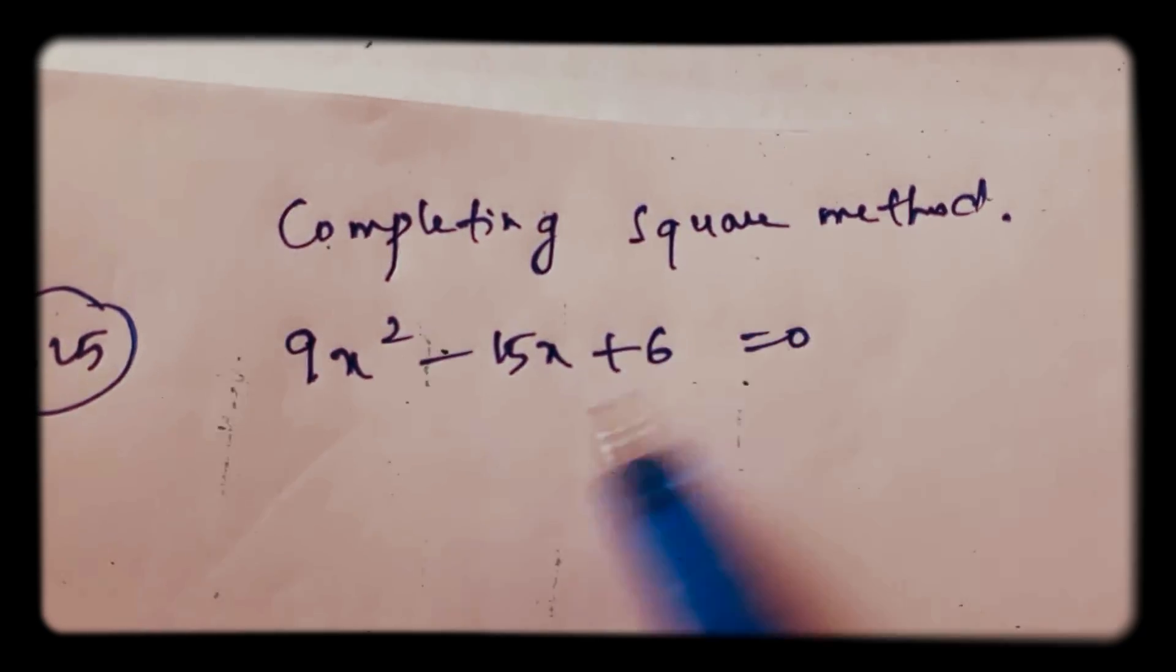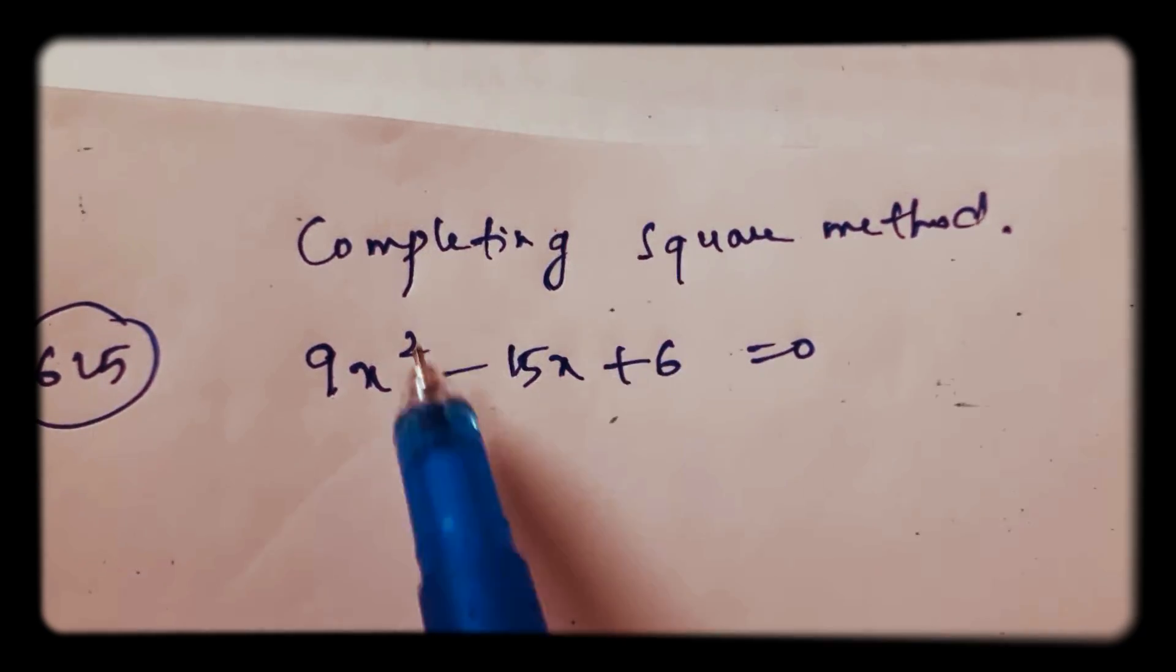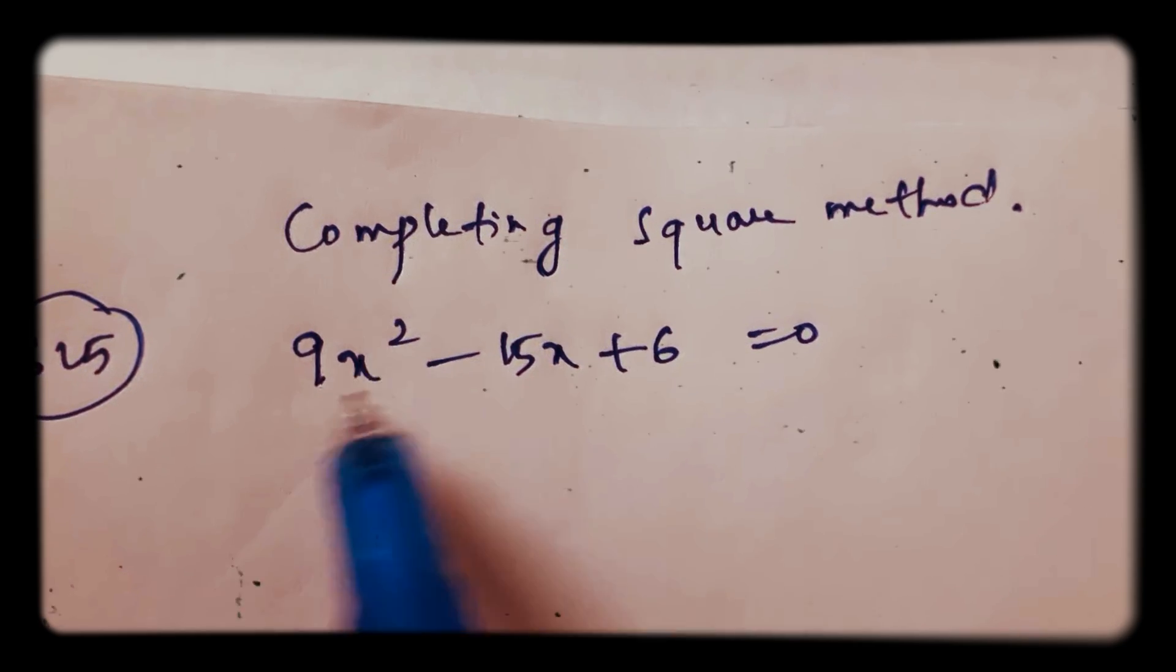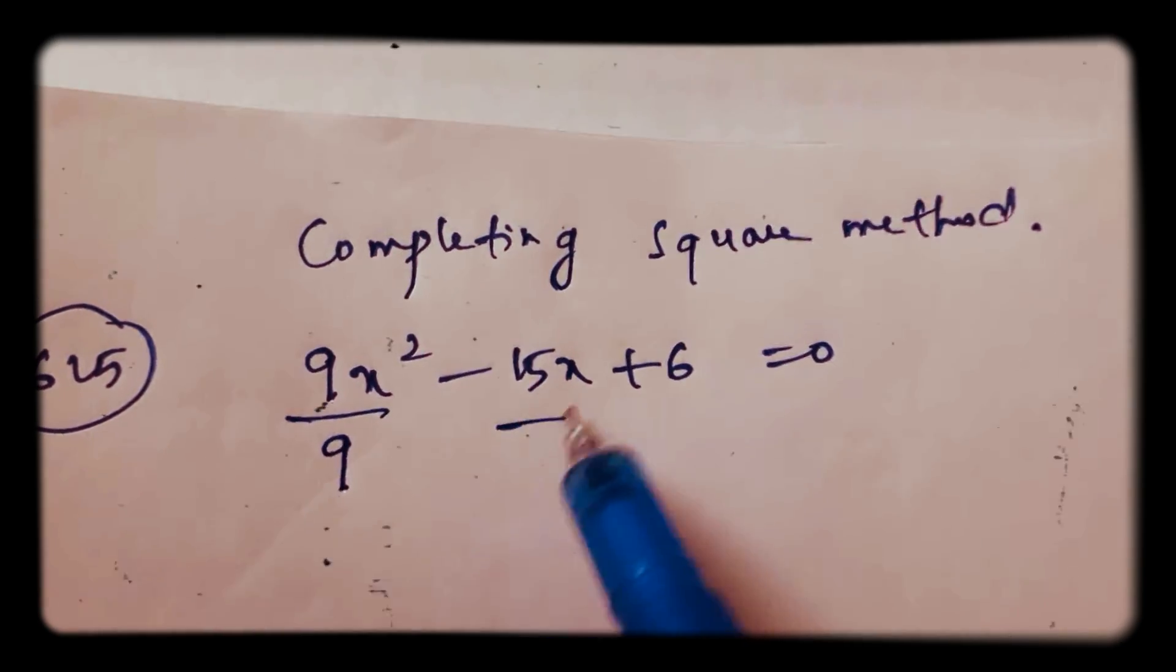Solve the quadratic equation by completing square method. So first step, make it x square. So divide everything by 9.